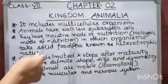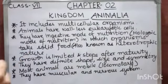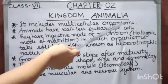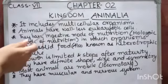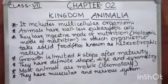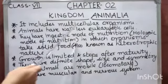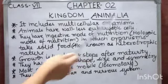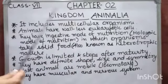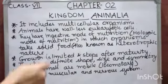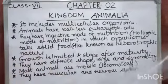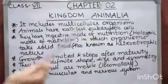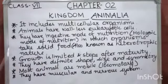Kingdom Animalia includes all kinds of animals. Animals are multicellular organisms — they have many cells. Animals have wall-less eukaryotic cells, meaning they have a well-defined nucleus but no cell wall. This is the key difference between animal cells and plant cells: plant cells have a cell wall, but animal cells do not.